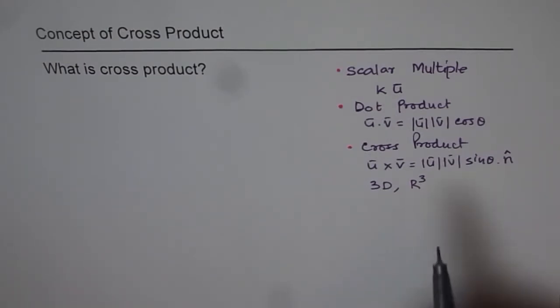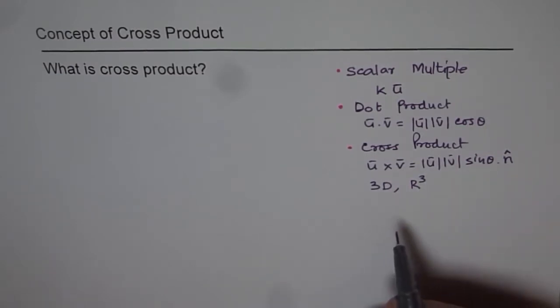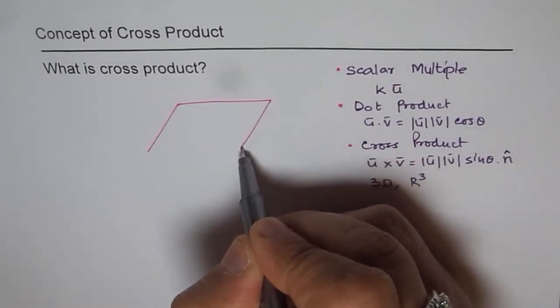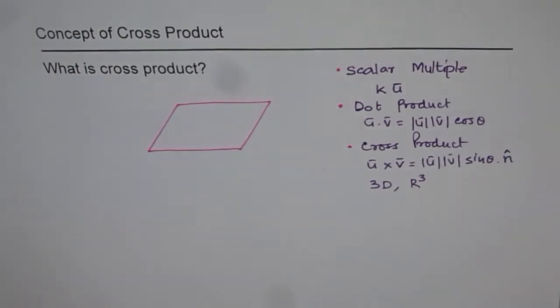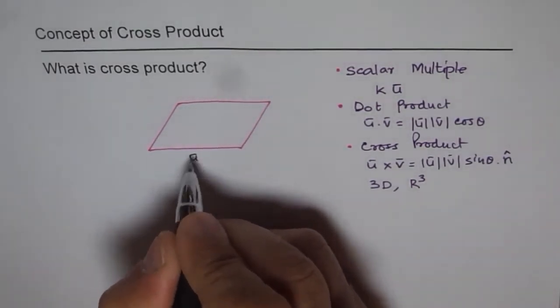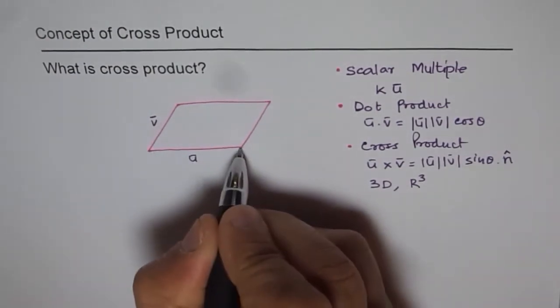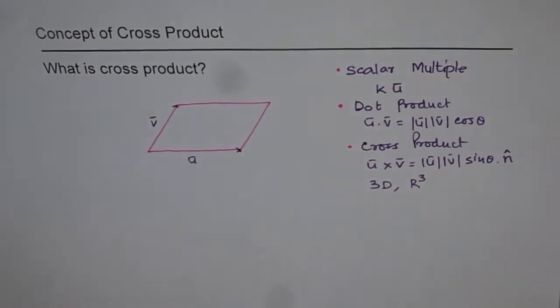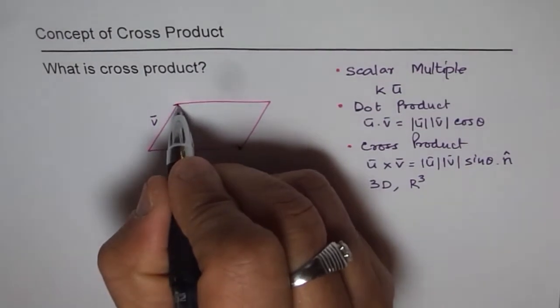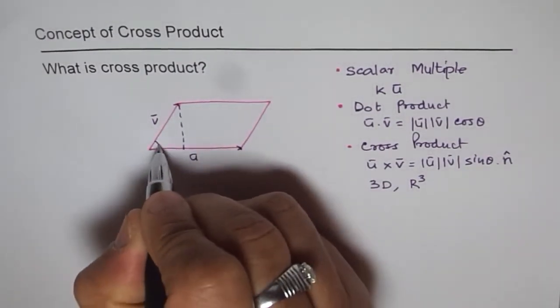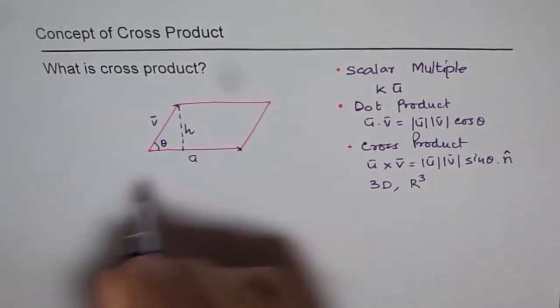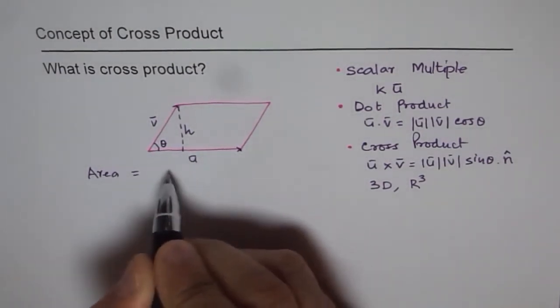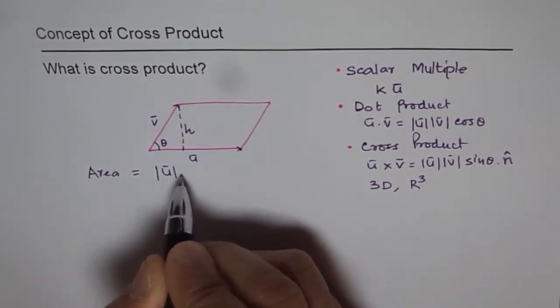To give you an idea about this magnitude and direction part, a very good example here is finding area of a parallelogram. Let's say we have a parallelogram here and its sides be U and V vectors. Let's say this is U and that is V and we form a parallelogram. If you want to find area of this parallelogram, what do you do? Let's say this angle is theta, then that's the height.